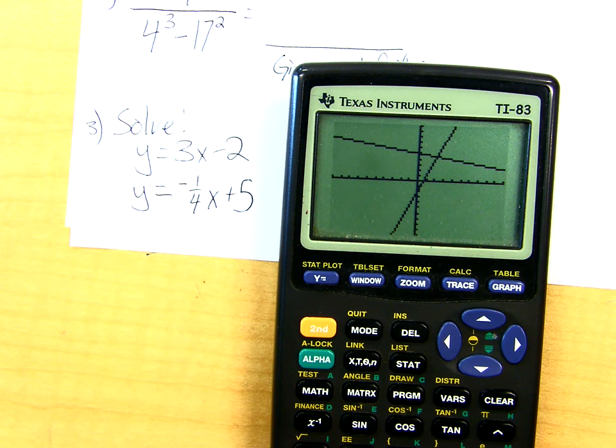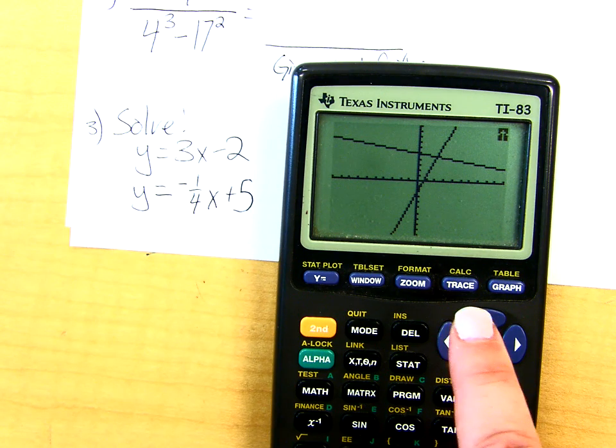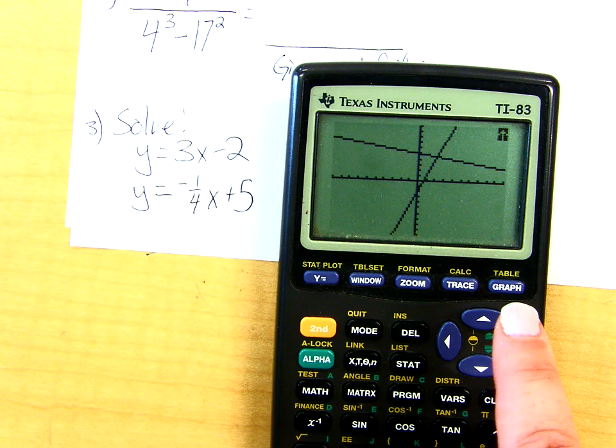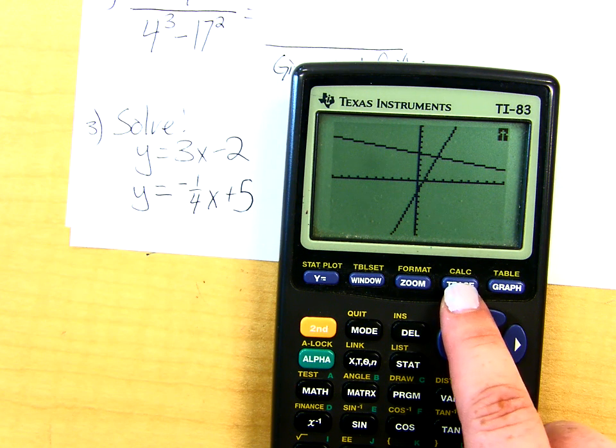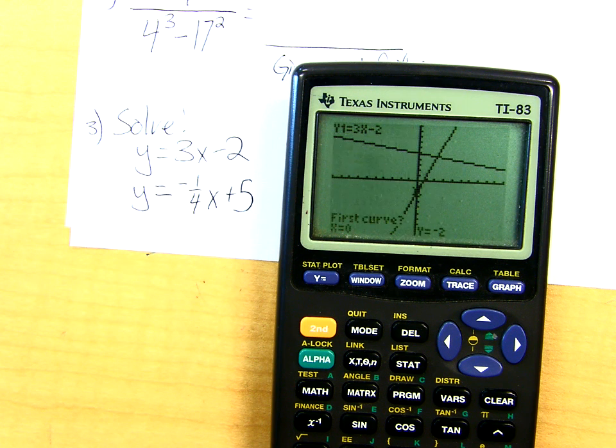So now, I remember from yesterday how I asked the calculator to tell me the exact point where those two lines cross. What do I hit? Second. Yeah, remember, we're trying to access that calc menu. So second calc, and then it's choice five for intersect, right, because I'm trying to figure out where they intersect.